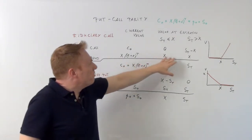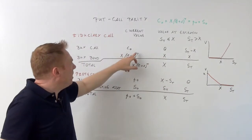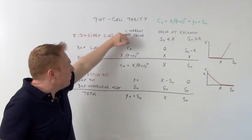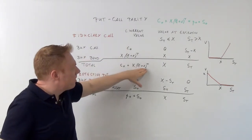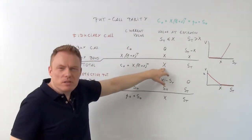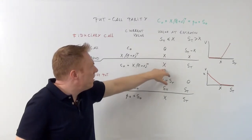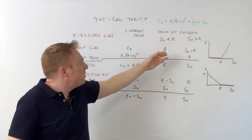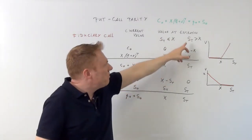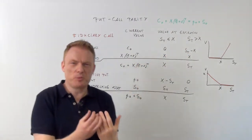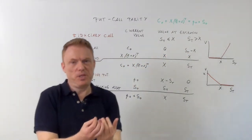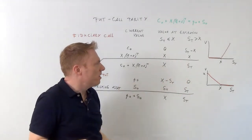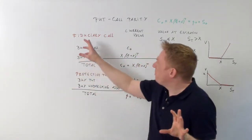So now tomorrow at capital T, the bond is worth capital X, but today it is worth X divided by (1 + r)^T. This leads to a total value right now of C₀ plus X/(1+r)^T, and a total value at period capital T of X in the case of S sub-T inferior to X, or S sub-T if the stock price is strictly superior to the exercise price. That's it with fiduciary call.